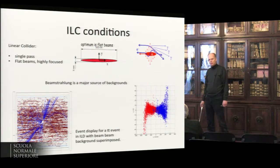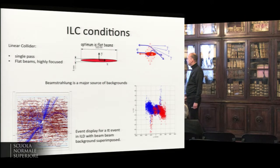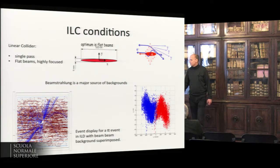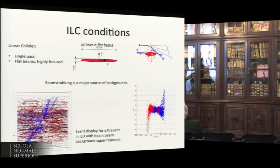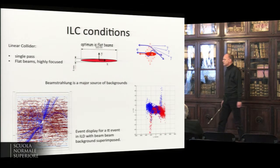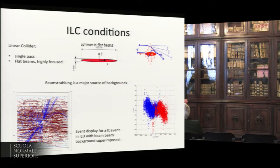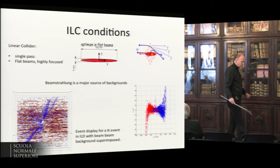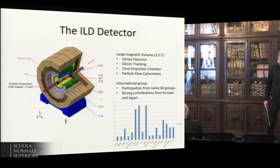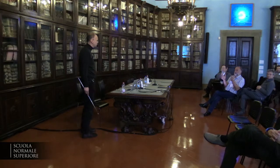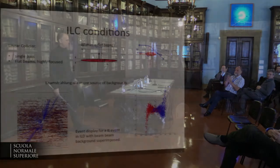A couple of hundred meters downstream, these beamstrahlung photons must be absorbed. For the detector, only the tails matter — very few go to large angles, but even those create a significant number of hits because the total numbers are so large. This picture shows a TPC event with the blue signal tracks and superimposed beamstrahlung hits integrated over roughly 100 bunch crossings — about a third of a train.